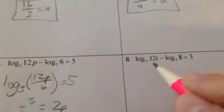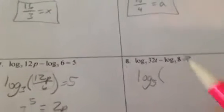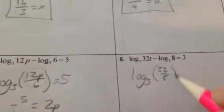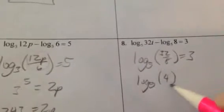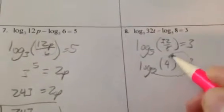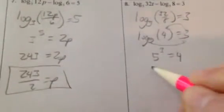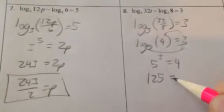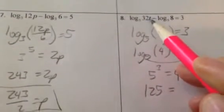And again. So smoosh the logs together. We have log base 5 of 32 divided by 8 will be 3. I can rewrite 32 divided by 8 as 4. So 5 to the 3rd power should equal 4. 5 to the 3rd power equals 4. 125. Whoa, where's the x? T. There's a t in there.